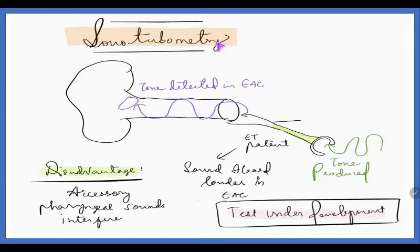Next is sonotubometry. The name says sonotubometry - making sound waves. Tubo refers to the tube, and metry means measuring. We are giving the tone in the nasal cavity and the nasopharynx. If at all there is patent Eustachian tube, this tone will be reaching the tympanic membrane, vibrating it, and that wave will be detected in the external auditory canal. The tone from the nasopharynx is detected in the external auditory canal via this way. But this test is actually under development. If there is patent Eustachian tube, the person will hear the sound very loudly. One disadvantage is accessory pharyngeal sounds may interfere.